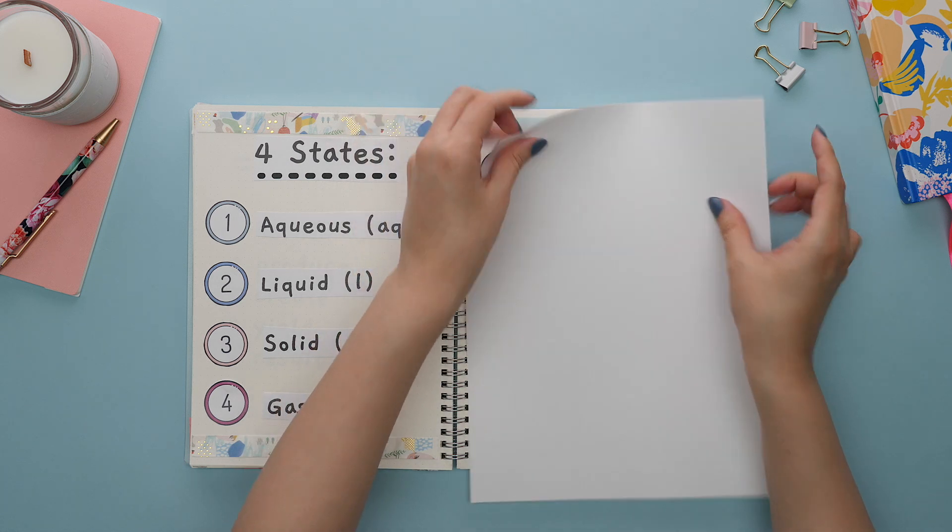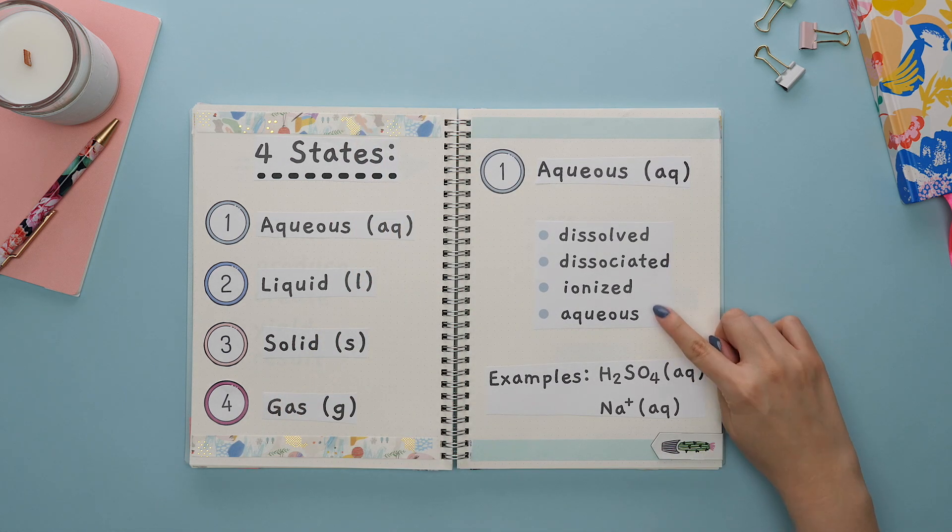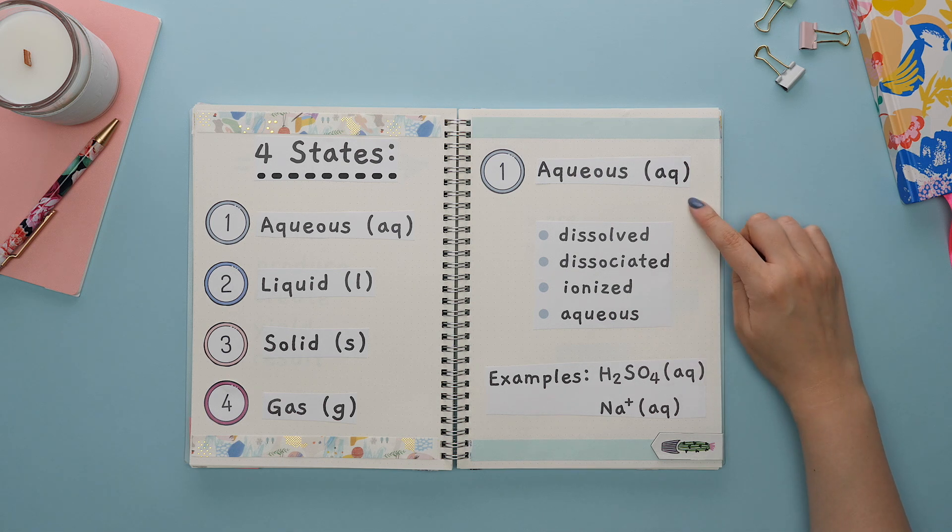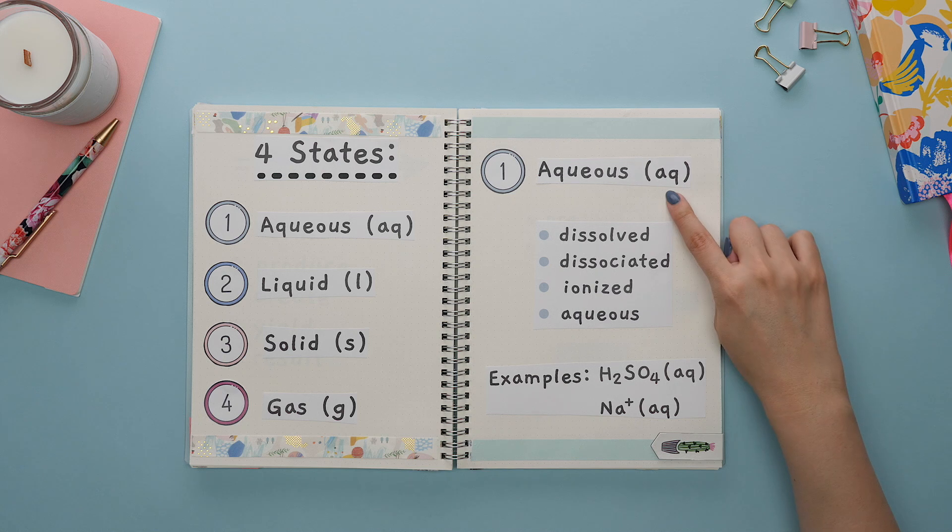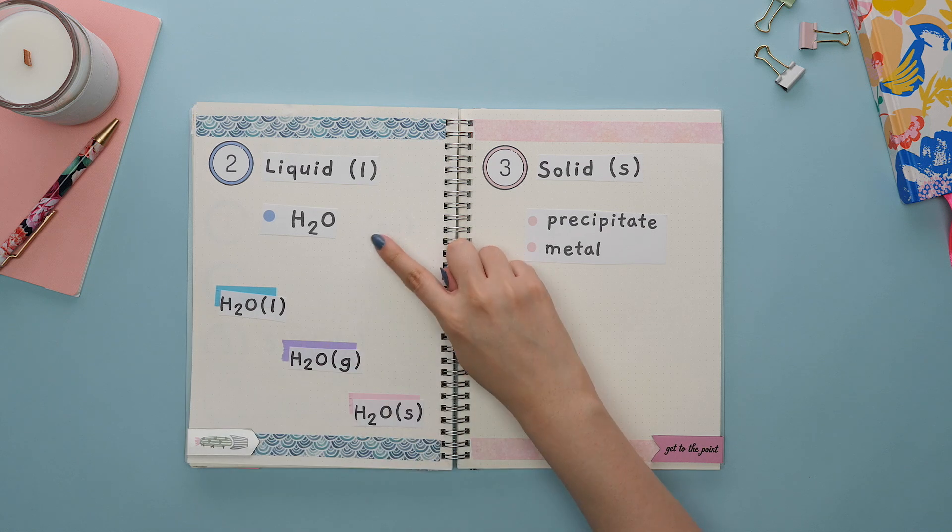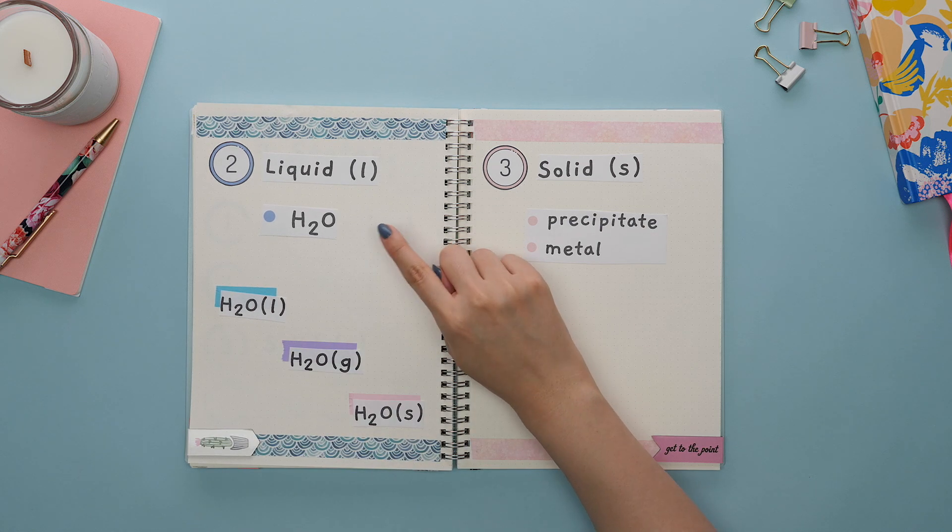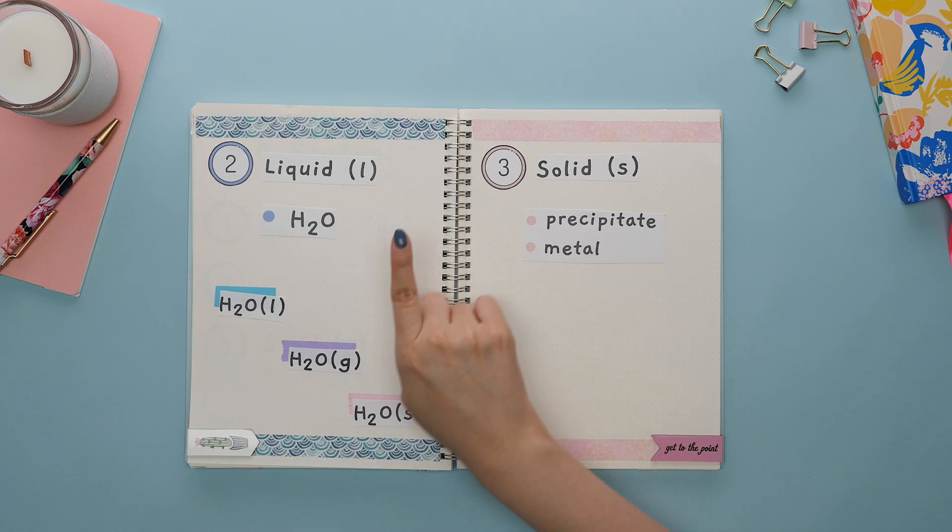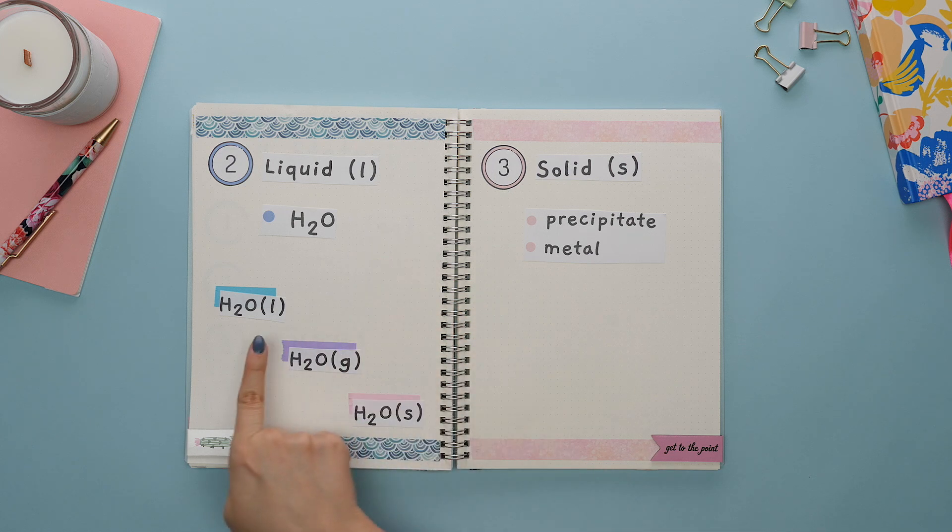When a question says dissolved, dissociated, ionized, or even just aqueous, this is how you know the state of the compound or element is aqueous, which we label as aqueous and place this in parentheses. Liquids are pretty easy to figure out since it's typically water, or the question will mention that there is a liquid. We can't always assume that water is a liquid because it could exist as a solid or a gas.